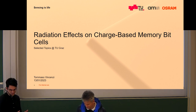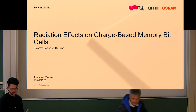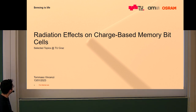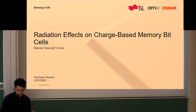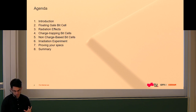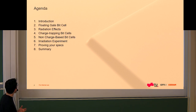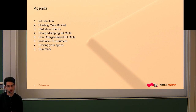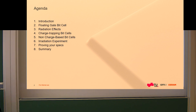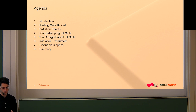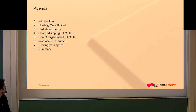We talk about radiation effects on charge-based memory bit cells. The lecture is divided into two major parts. The first one is up until point number five, where I give an overview of what is going on, the basic principles, and basically how to discuss the topic of reliability of memory bit cells, in particular non-volatile memory bit cells.